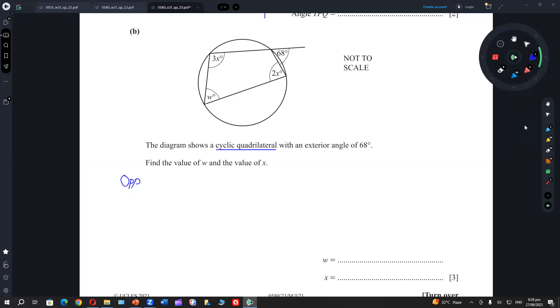It's basically something that has an exterior angle... You are not looking at the notes. Look at the notes. What is a cyclic quadrilateral? It has four vertices on the circumference, on the circle. Opposite angles sum to 180. The exterior angle is always equal to the interior angle, the opposite.